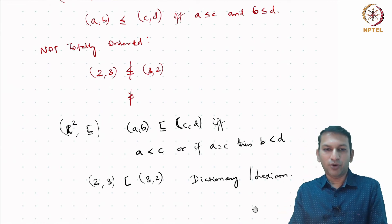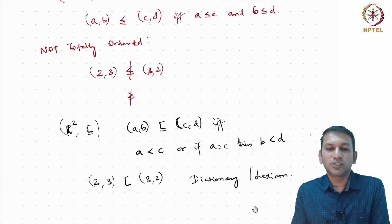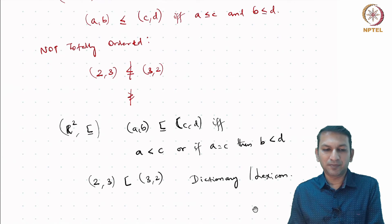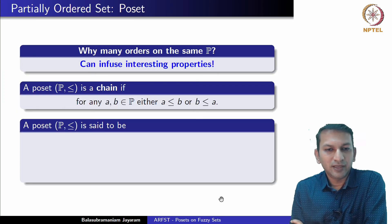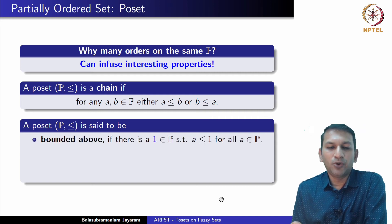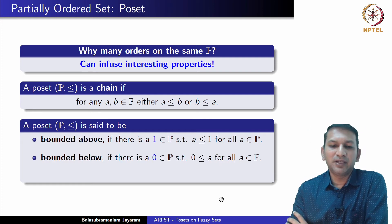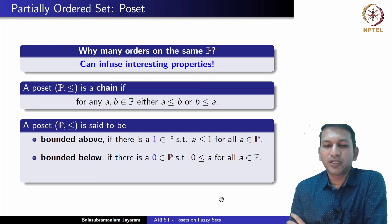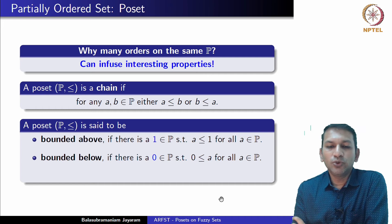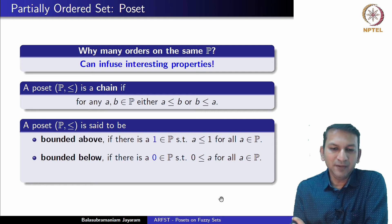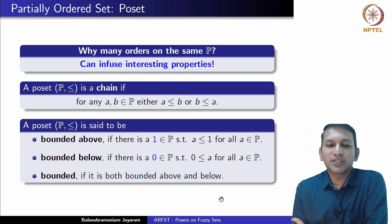Having a different order can give more properties and lead to special types of posets. A poset is said to be bounded above if there exists an element — denoted 1 — such that every element is ordered below it. It is bounded below if there exists an element below which no other element exists. If it is both bounded above and below, we call such a poset a bounded poset.